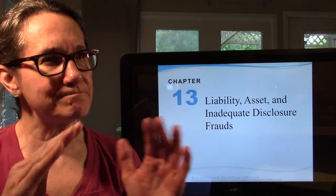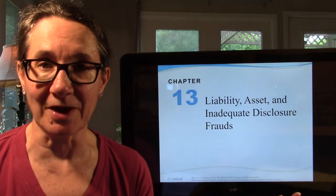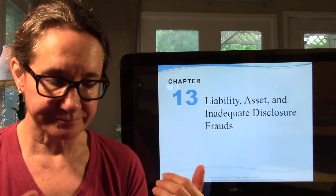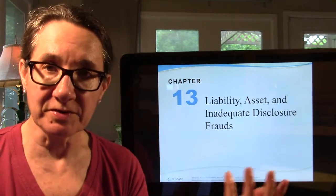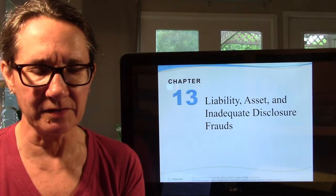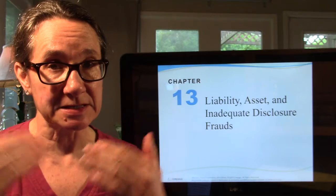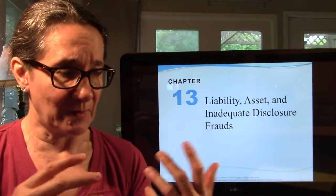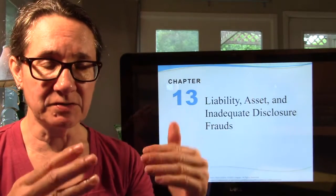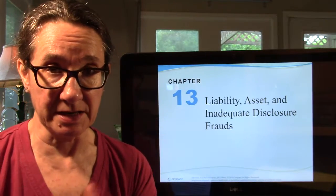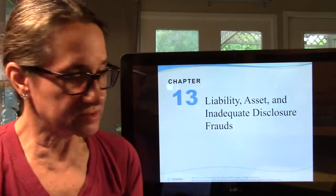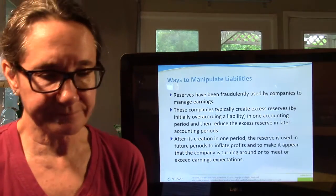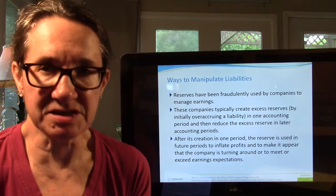The bottom line of financial statement fraud is they're trying to change their bottom line — they want net income to look bigger. We've talked about how they can inflate revenues and how they can decrease expenses, typically by decreasing cost of goods sold by inflating the asset inventory. Higher revenues or lower expenses can make net income look bigger, and they are still doing that by messing with liabilities, assets, and just not disclosing stuff.